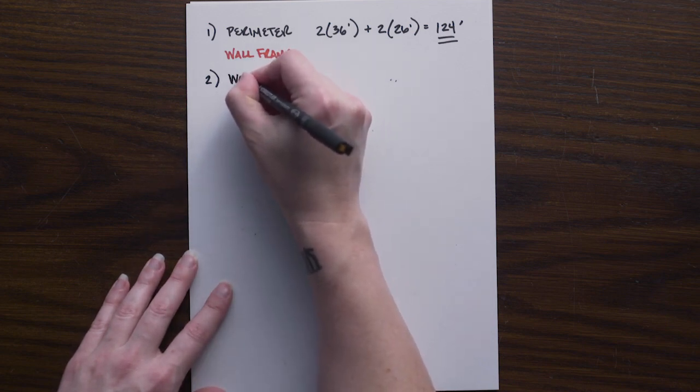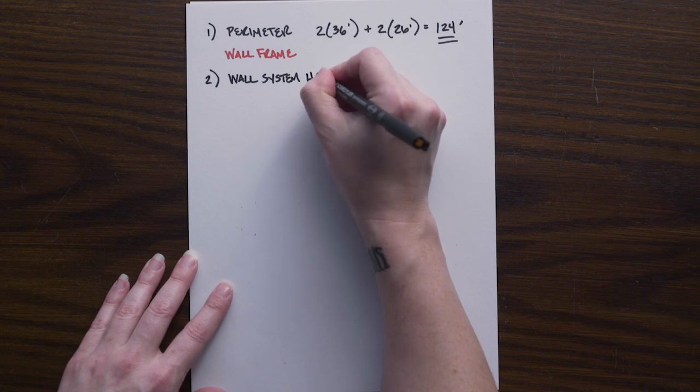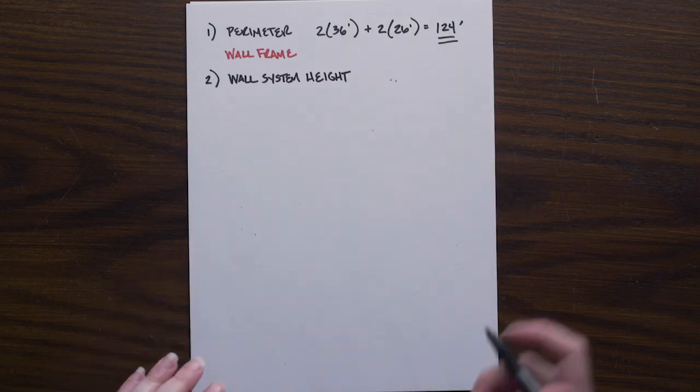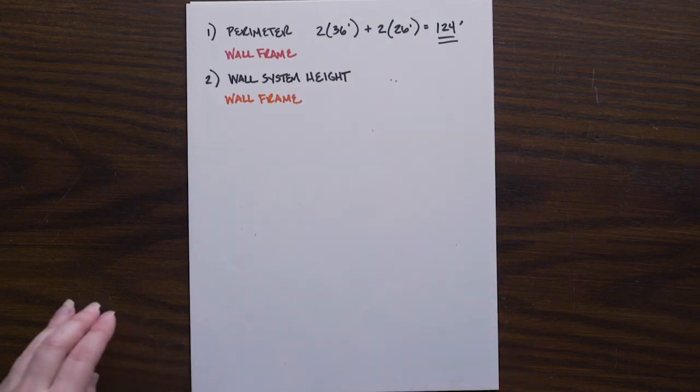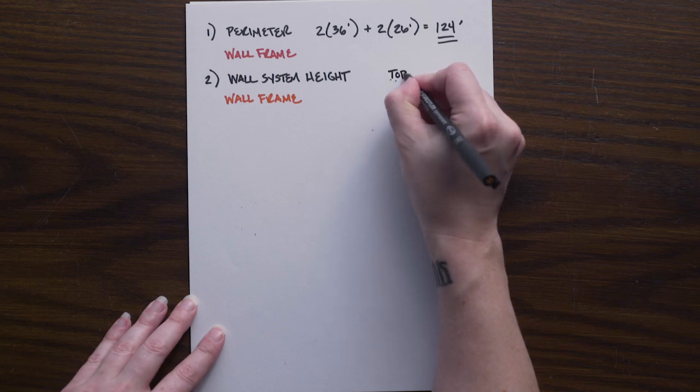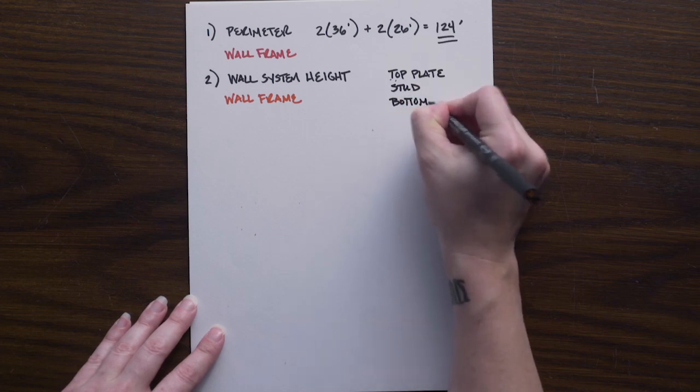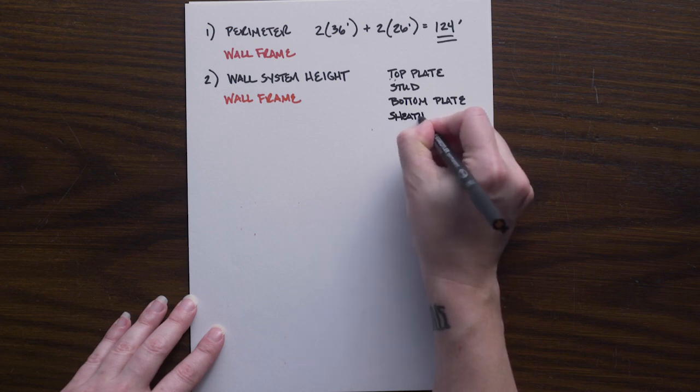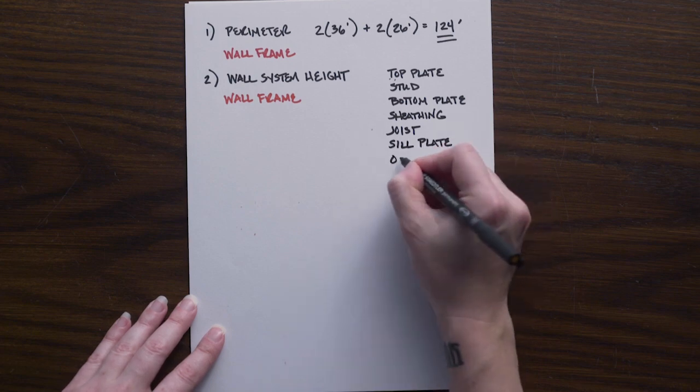Next up, we are looking at the wall system height. So this is our wall system as well as our floor system together. And we need this when we are calculating the exterior sheathing. If you look at the sample problem again from the wall frame, this is where we calculated our number initially. So the wall system height, we have our top plate, we have our stud, we have our bottom plate. And this all comprises the wall itself and then the floor system. We had our floor sheathing, we had our joist, we had our sill plate, and then whatever the specified overlap is on our foundation.